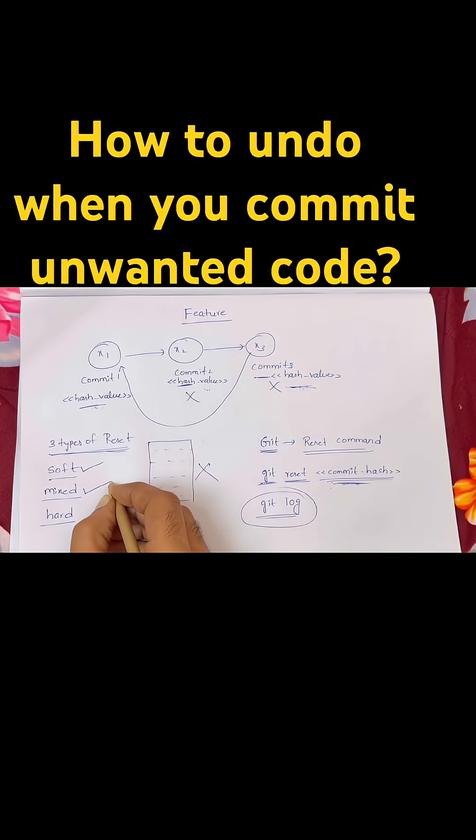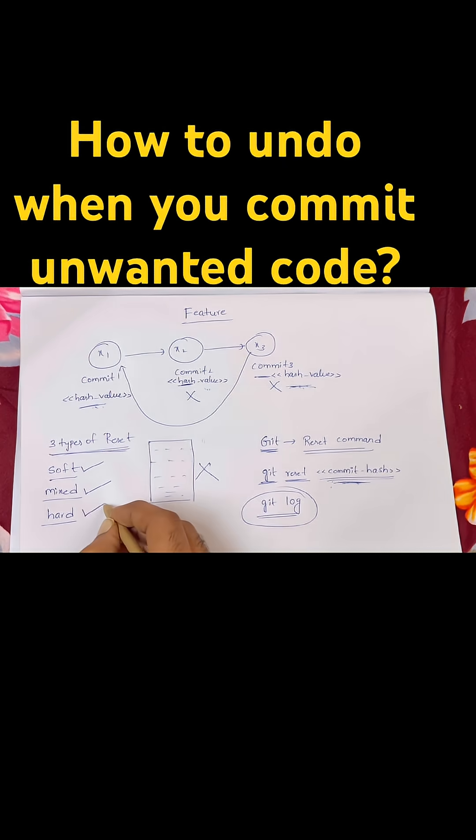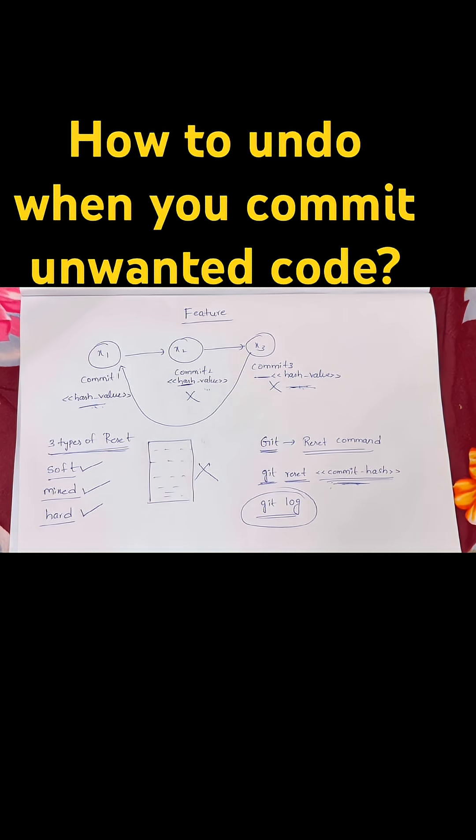In mixed reset, the commit history is deleted and changes are saved in working directory as uncommitted changes. In hard reset, it deletes history and the code too.